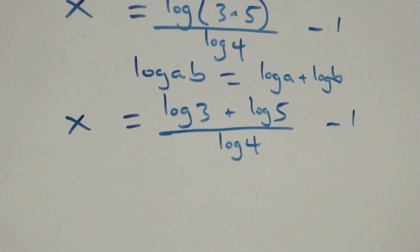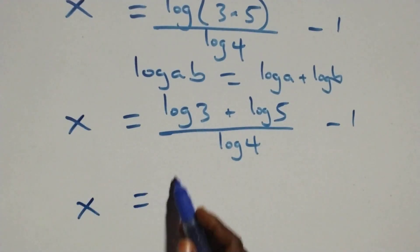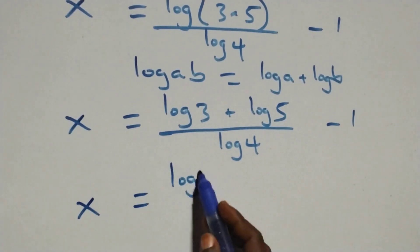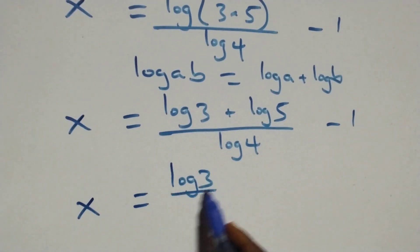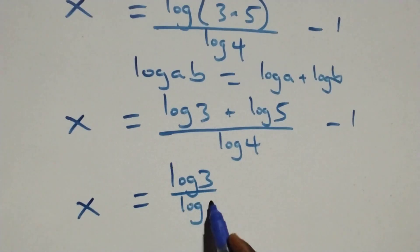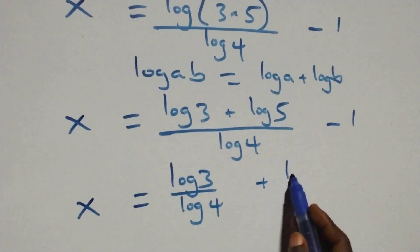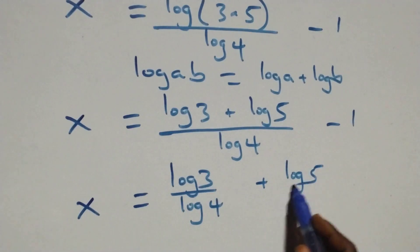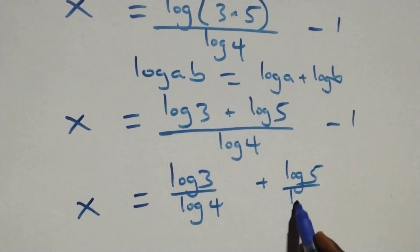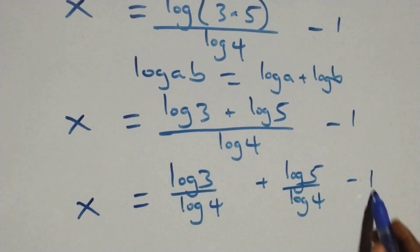We separate this into two fractions: x equals log 3 over log 4 plus log 5 over log 4, minus 1.